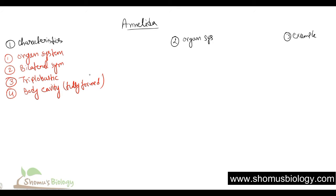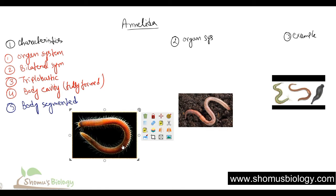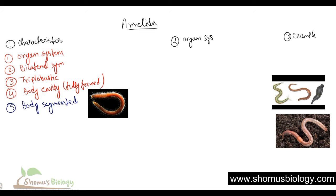Another important feature is that their body is heavily segmented. You can clearly see in pictures of Annelida that they have a heavily segmented body. In every single body segment there is a foot attached, known as parapodia. So they have parapodia attached to every single body segment.